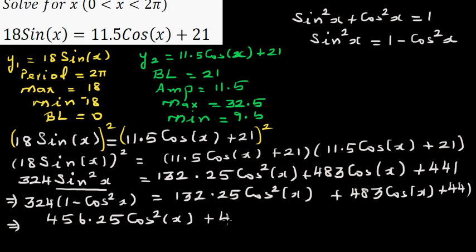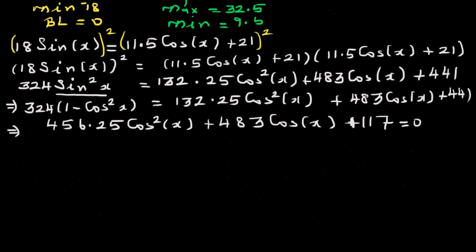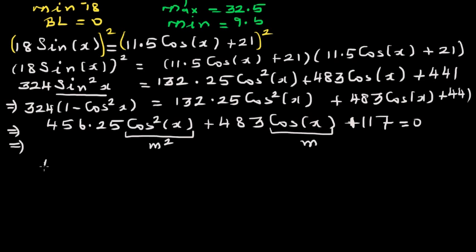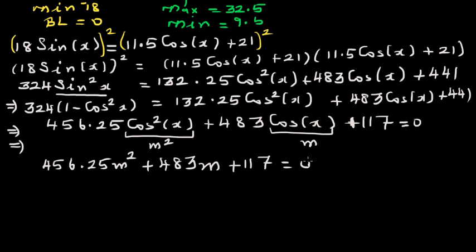So we have 456.25 cos²x + 483 cos x + 117 = 0. You can pause and verify the simplification yourself. This has become a quadratic equation. Let m = cos x, so this is 456.25 m² + 483 m + 117 = 0. You can use the quadratic formula or go to your equation solver — polynomial, second degree.